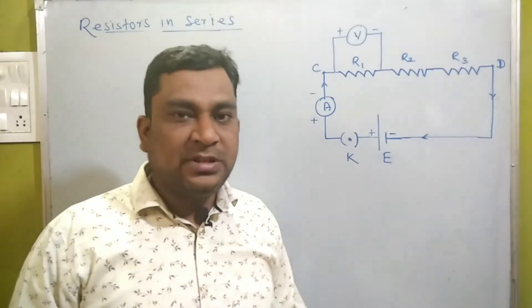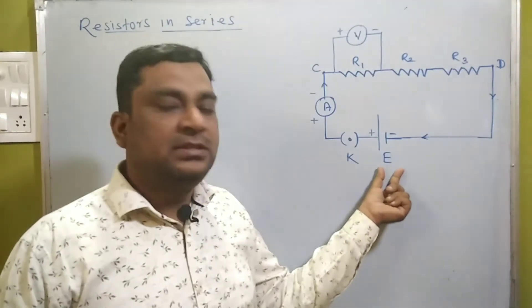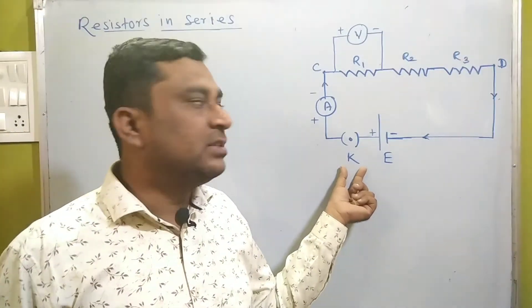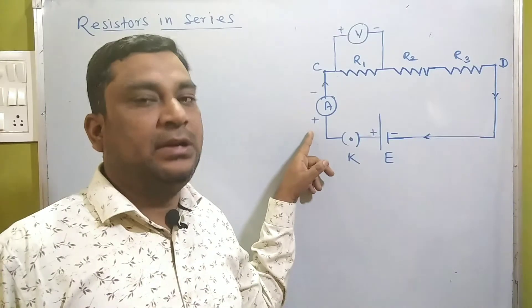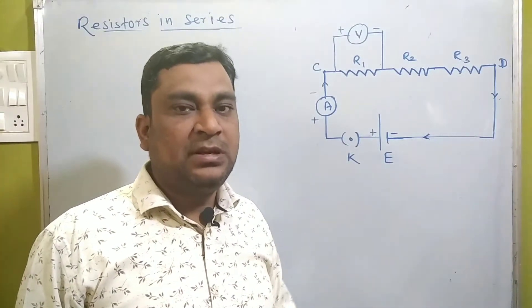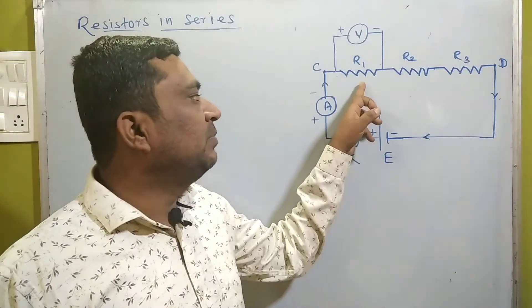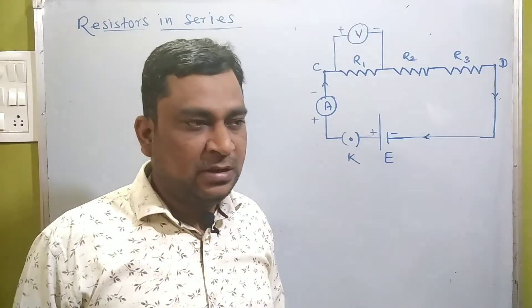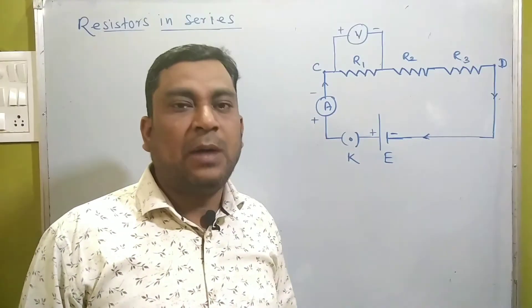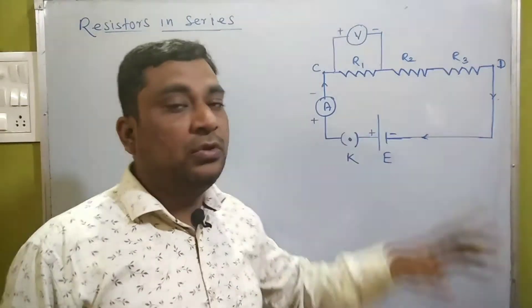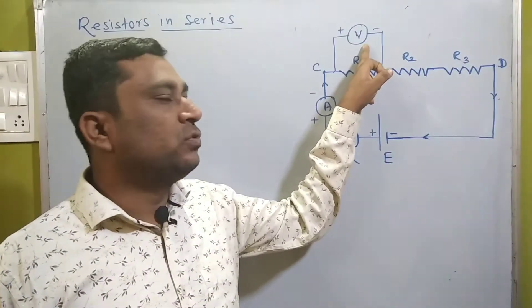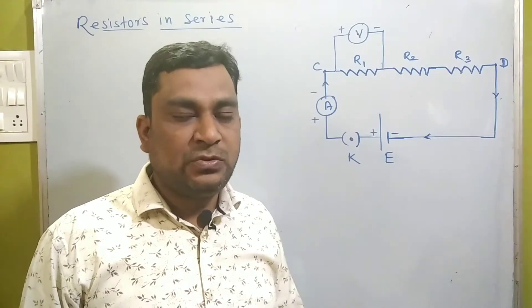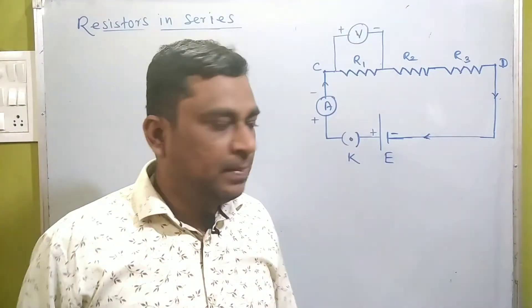Observing the circuit symbols: this symbol is used to denote the battery or cell. Second is the key, which is in the on state. Third, 'A' stands for the ammeter, a device used to measure current in a circuit. These are the symbols for a resistor, which is a device used to control the flow of current. And 'V' stands for voltmeter, which is used to measure the potential difference across each resistor.